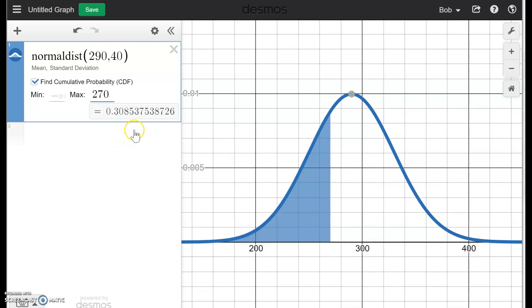And I see that the proportion of seals that lie within that area is 0.3085. I usually go out four decimal places. That tends to be safe.